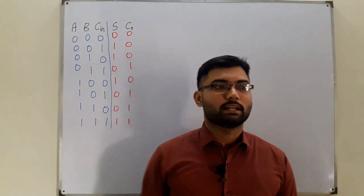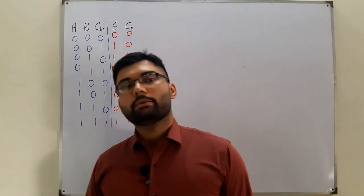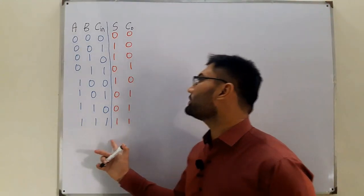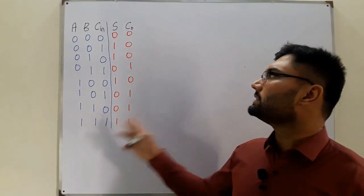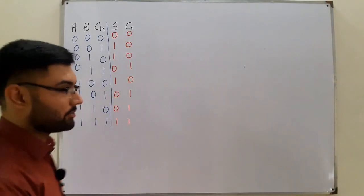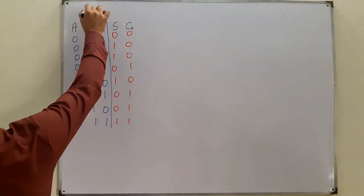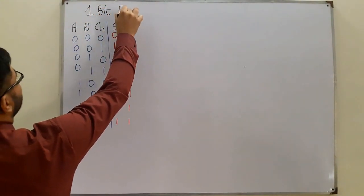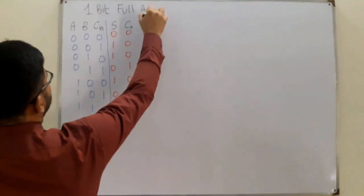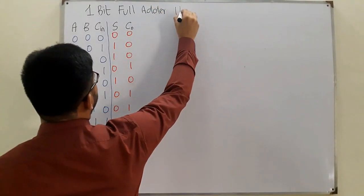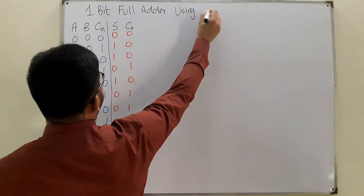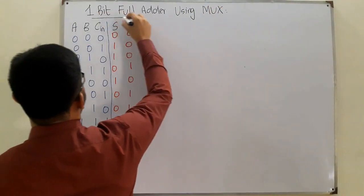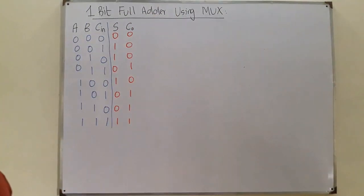Bismillahirrahmanirrahim. Assalamu alaikum. Today we implement a full adder using a multiplexer. This truth table — you're already familiar with it — is the truth table for the full adder. Today our topic is a one-bit full adder using a multiplexer.